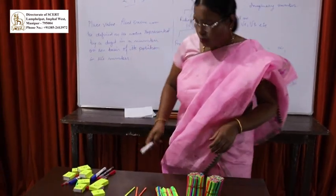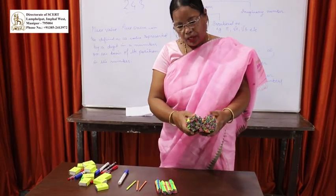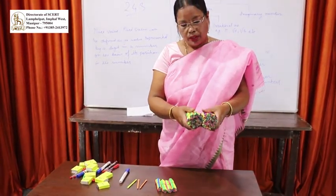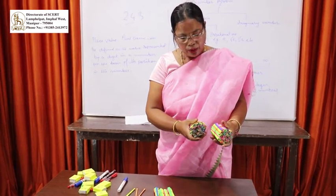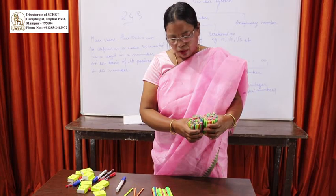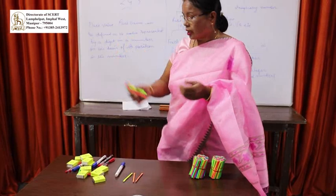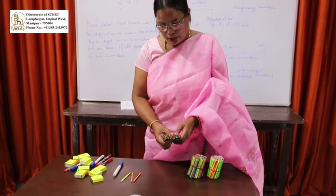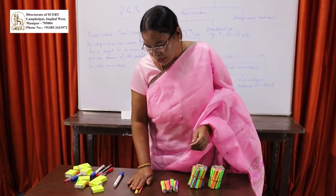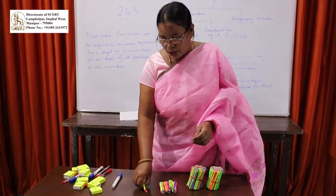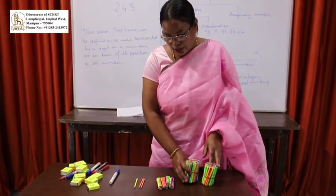So if you want to make 2 pieces of paper into bundles, you can group them. This demonstrates the place value concept. The place value concept is built by grouping by 10, 20, 30, 40, and so on. This is the concept we are using.